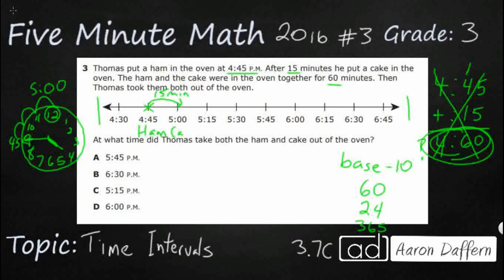And this is where the cake comes in. So now we have the ham and the cake. And when we have the ham and the cake, it's another 60 minutes. Now if we want to, we can use this clock again and we can say, well, let's see. It's now at 5 o'clock. But you see my clock is kind of getting messy.